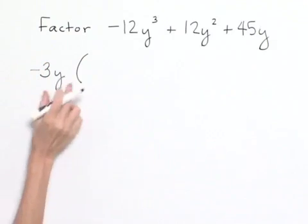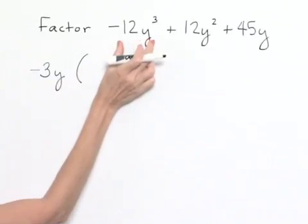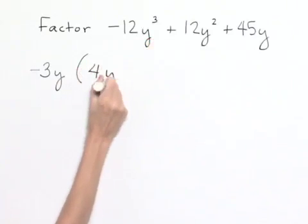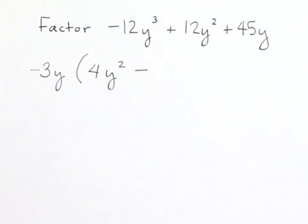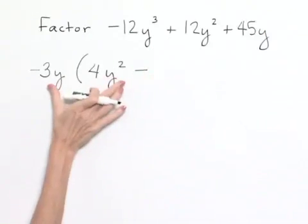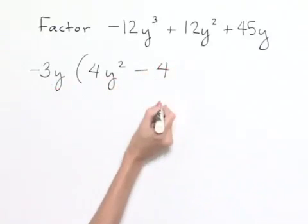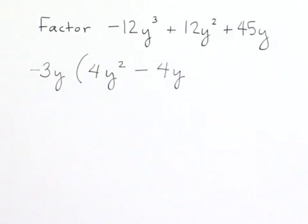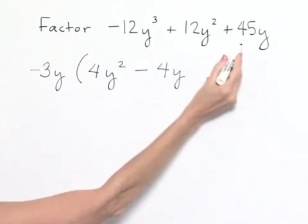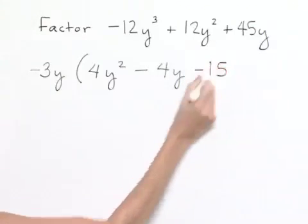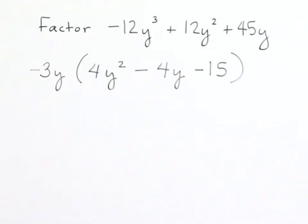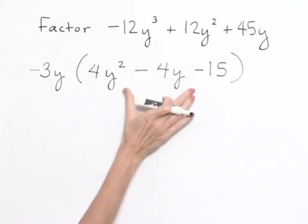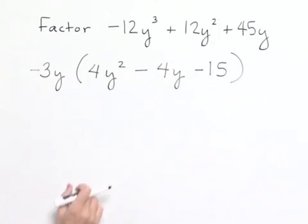Let's see what's left. If we take negative 3y to come back and end up with negative 12y cubed, we would need to multiply by 4y squared. Because we're factoring out a negative, we're going to need a negative sign between the next two terms. 3 times 4 gives us 12, and y times y gives us y squared. Factoring out negative 3 from our last term gives us negative 15, and factoring out the y leaves no remaining y. This factor, negative 3y, will continue throughout all the next steps, but what we need to concentrate on now is factoring the trinomial 4y squared minus 4y minus 15.